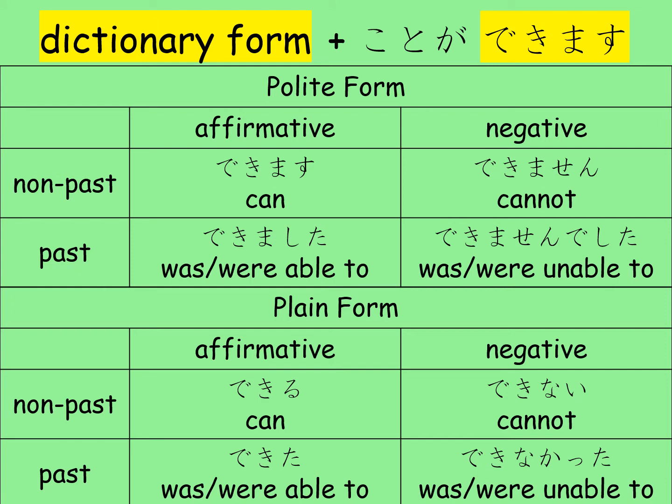Using a verb in the dictionary form with ことができます adds the meaning of 'can.' By changing できます into its different forms, we can change the meaning to 'cannot,' 'was able to,' or 'was not able to.' This table shows you how to change できます into its various forms. I wrote 'was able to' instead of 'could' because the English word 'could' can mean something else. できました、できませんでした、できた、できなかった are purely about 'was able to' or 'was not able to.'